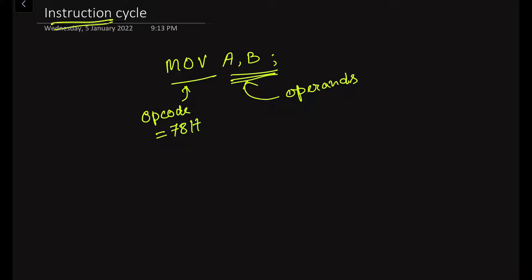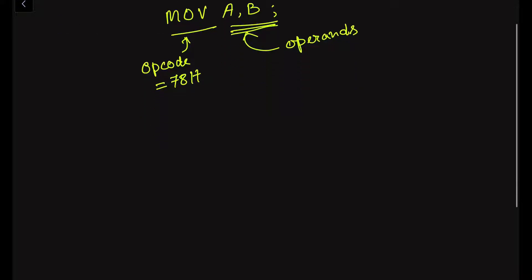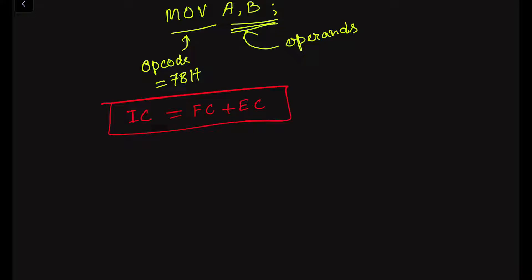Now, let us look at the instruction cycle. We represent it as IC. The instruction cycle is the summation of the fetch cycle (FC) plus the execution cycle (EC). The instruction cycle is the total time required by the microprocessor to execute an instruction — there will be some fetching time and some execution time.